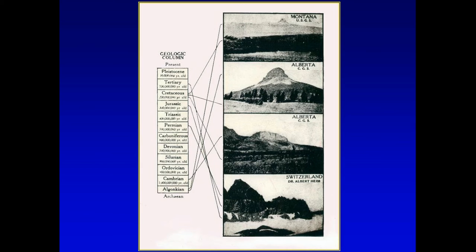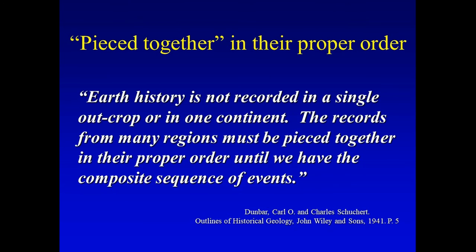From Carl Dunbar's Outlines of Historical Geology: 'Earth history is not recorded in a single outcrop or in one continent. The records from many regions must be pieced together in their proper order until we have the composite sequence of events.' That's not a creationist statement — it's right there in the geology books.